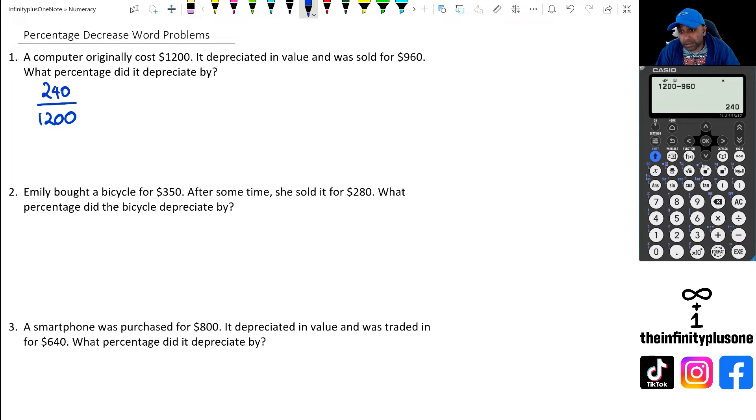So 1,200 was its original price and it's reduced by 240. So now we just need to convert that into a percentage. We're converting a fraction into percentage. So I'm going to go 240 divided by 1,200, and then multiply that by 100. And when I do this, I am going to get 20%. So we can write 20% decrease.